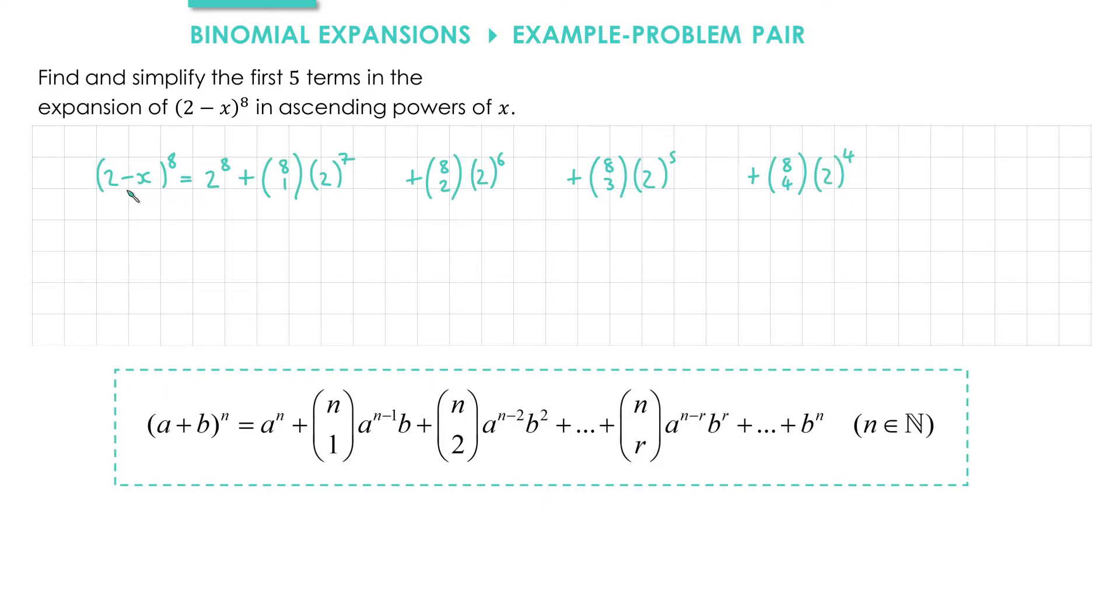Then we'll do the powers of negative x. We've got negative x to the power of 1, negative x to the power of 2, negative x to the power of 3, and negative x to the power of 4. And because there are more terms, I'm just going to put plus dot dot dot on the end.